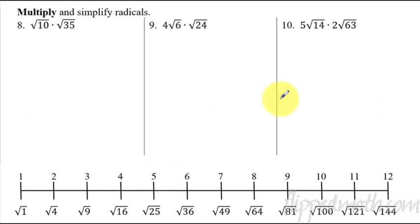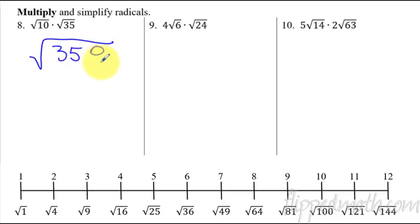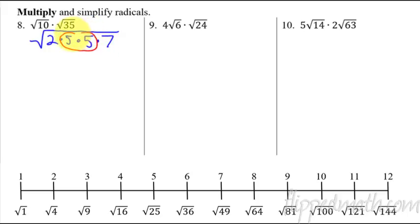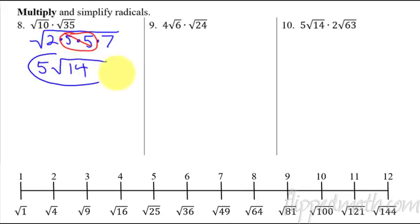For the next problem set, we're going to multiply and simplify. This is where prime factors are really helpful. If I did radical 10 times radical 35 and multiplied first, I'd get radical 350 — that could be a pain to break down. But watch how much easier it is to break each into prime factors right away: 10 is 2 times 5, and 35 is 5 times 7. Together you've got a buddy pair of 5s that come outside the radical, leaving radical 2 times 7. The answer is 5 radical 14.